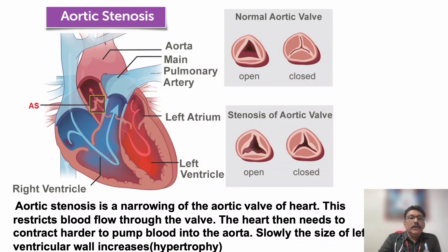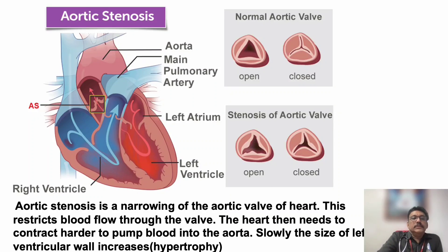The aortic valve is placed at the outlet of the left ventricle. Through this valve, blood goes to the aorta and to the systemic circulation. Normally, when there is pressure from the left ventricle, the valve opens during left ventricular systole, and blood flows to the aorta and systemic circulation.